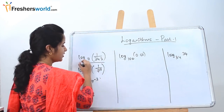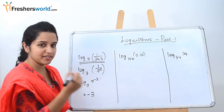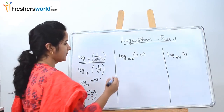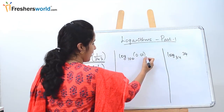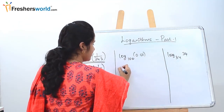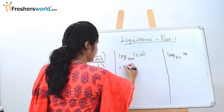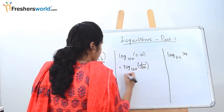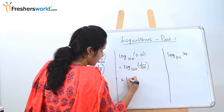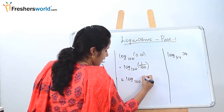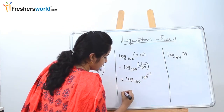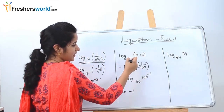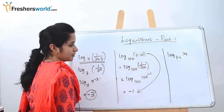Once you simplify, log(1/343) to the base 7 is nothing but minus 3. Let's solve another sum. They have given log(0.01) to the base 100. How can 0.01 be written? It is 1 by 100. If 100 goes on the top, it becomes log(100 power minus 1), so the value is minus 1. Log(0.01) to the base 100 is nothing but minus 1.